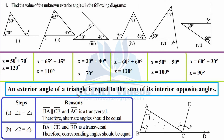Now the property says that the exterior angle formed is equal to the sum of its interior opposite angles. The interior angles are angle A, B, and C. If we are considering exterior angle ACD, its opposite interior angles are angle A and angle B. This is the concept behind this property or theorem.